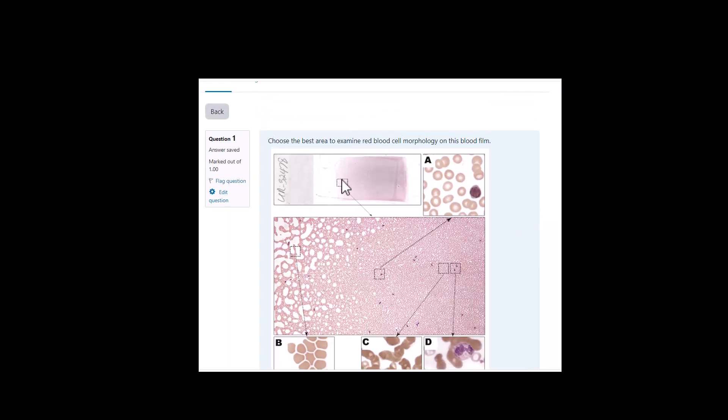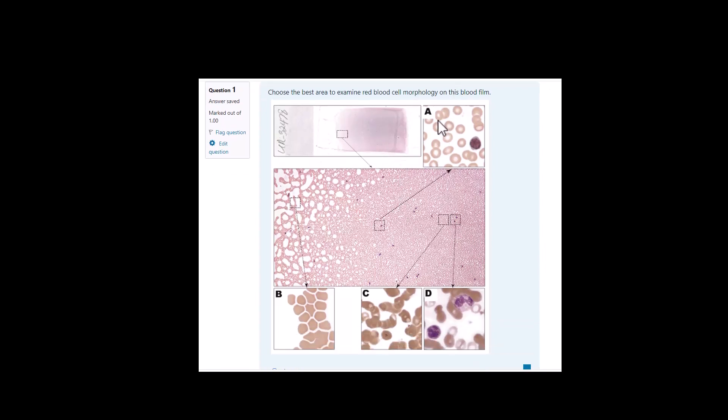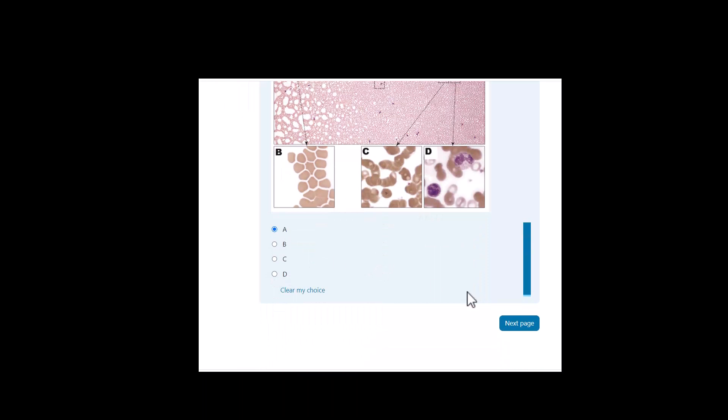Here's an example of a question where I asked where's the best place on a blood film to examine red cell morphology. You have a choice between A, B, C, and D. You choose A.